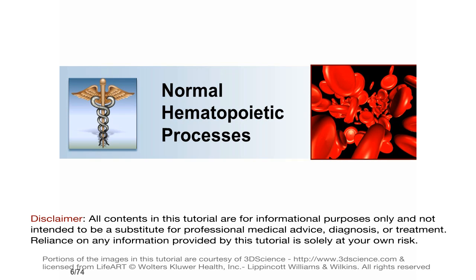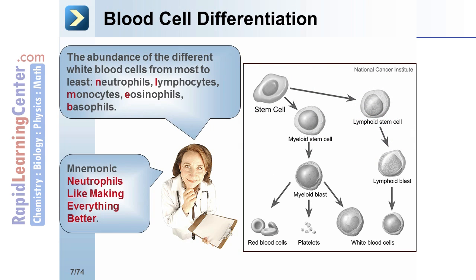Now, let's get started with a review of normal hematopoietic processes. Blood cells differentiate from pluripotent hematopoietic stem cells. In the first step, they differentiate into pro-erythroblasts, myeloblasts, monoblasts, megakaryoblasts, and lymphoblasts.